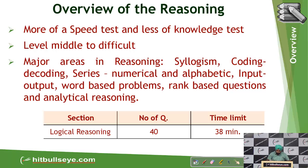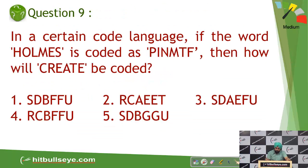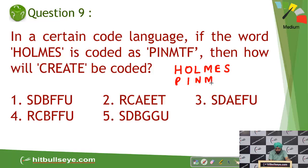Now let's solve a few reasoning questions. In this coding question, HOLMES is coded as PINMTF. The logic is very simple: the code for O is P and H is I — that is plus one. Similarly, L is coded as M and M as N — again plus one. E is F and S is T — again plus one.